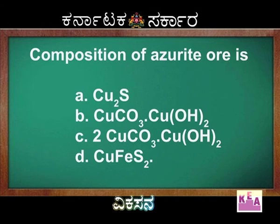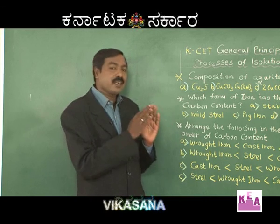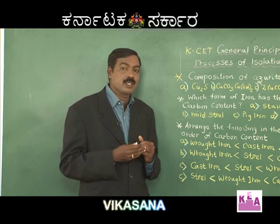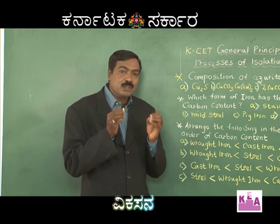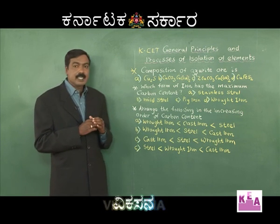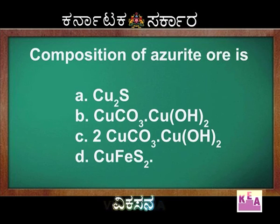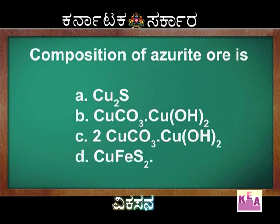I'd like to confirm it once again. You have option B and option C. Option B has CuCO3·Cu(OH)2, which happens to be malachite. Two times of malachite happens to be azurite. So: Cu2S is copper glance, CuCO3·Cu(OH)2 is malachite, 2[CuCO3·Cu(OH)2] is azurite, and CuFeS2 is chalcopyrite or copper pyrite. The answer relevant for this question is azurite, which is option C.